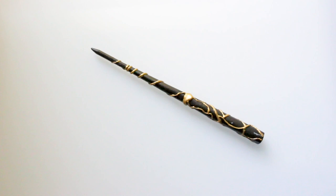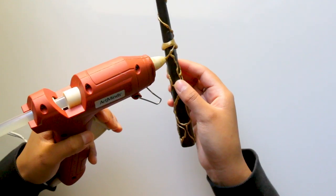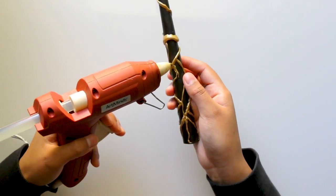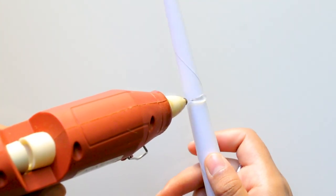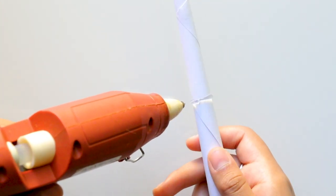For this previous wand, I made a vine-like design by adding hot glue to the wand as I rotated it. For this wand, I wanted to keep it simple so I added two rings of hot glue by rotating the wand as I glued.